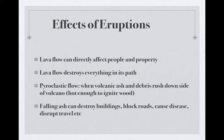So what are some of the effects of an eruption? First, lava flow can directly affect people and property. Lava flow destroys everything in its path — anything it touches is going to be destroyed, either caught on fire or completely overtaken. One type of flow is called pyroclastic flows, and this is when the volcanic ash comes down the side with such force that the side of the volcano is actually taken out. When we did our interactive volcano lab, you were able to see what those look like — they come down with such speed and such heat that it ignites the wood it touches.